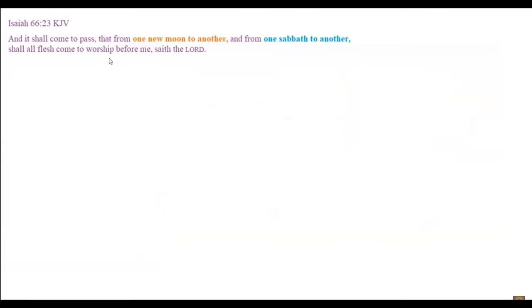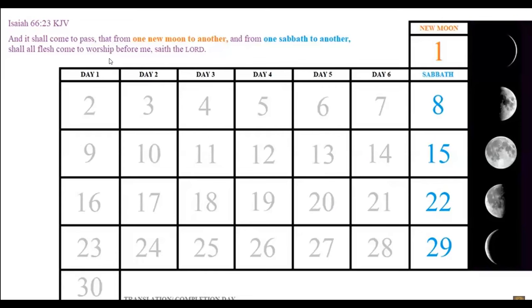Isaiah 66:23: 'And it shall come to pass, that from one new moon to another, and from one sabbath to another, shall all flesh come to worship before me, saith the LORD.' This verse is an unfulfilled prophecy about the future millennium of Jesus Christ. The new moon is the first day of the month and the Sabbath is always the seventh day of the week. Worship will take place from new moon to new moon and from Sabbath to Sabbath. Isn't that amazing that the true biblical calendar will be finally restored with the second coming of Jesus Christ?